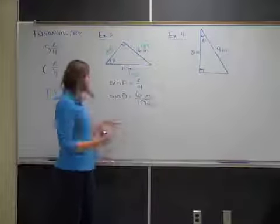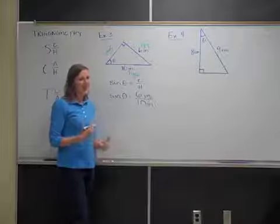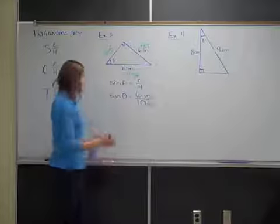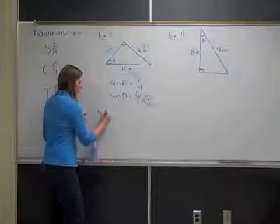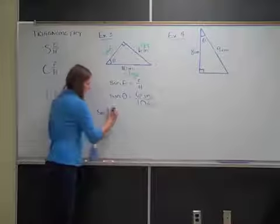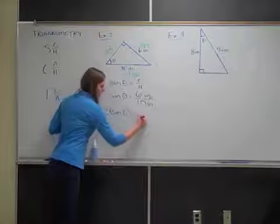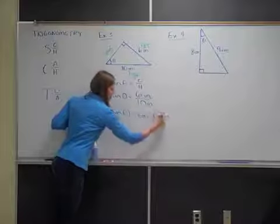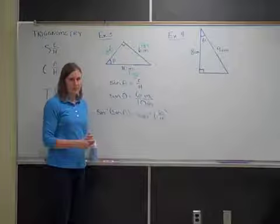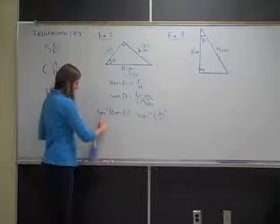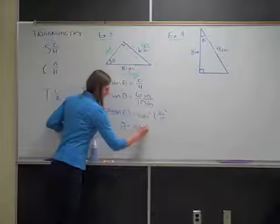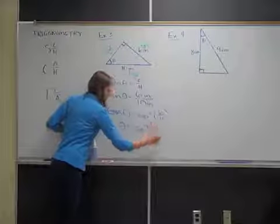Now, to get rid of the sine — a lot of people want to divide both sides by sine, but sine is not a number; it's more like an operation. To get rid of the sine, you use the inverse sine, written as sine with a negative one exponent. Apply the inverse sine to both sides. The sine and inverse sine cancel each other, leaving theta equals the inverse sine of 6 over 10.